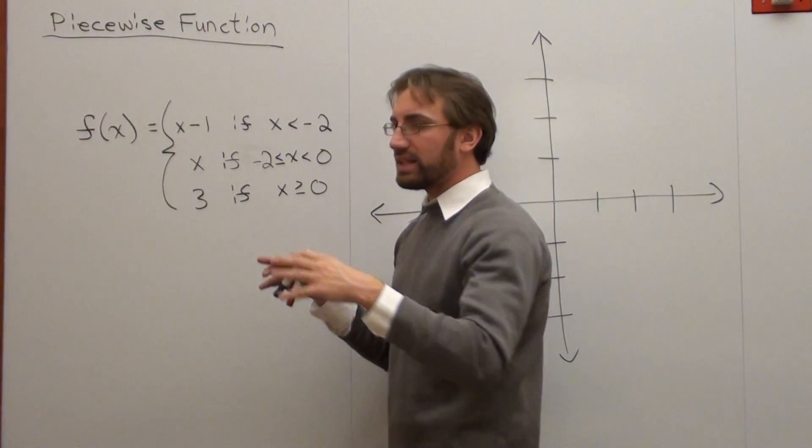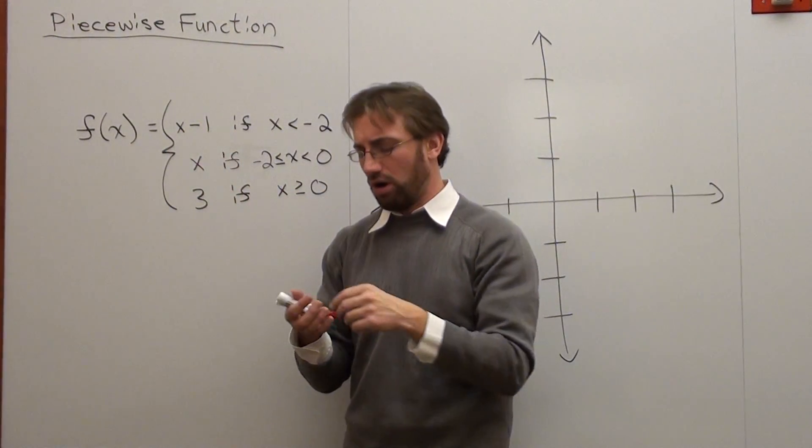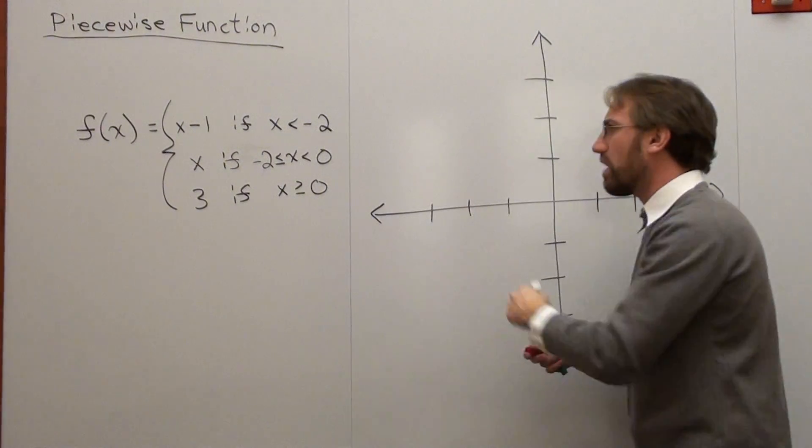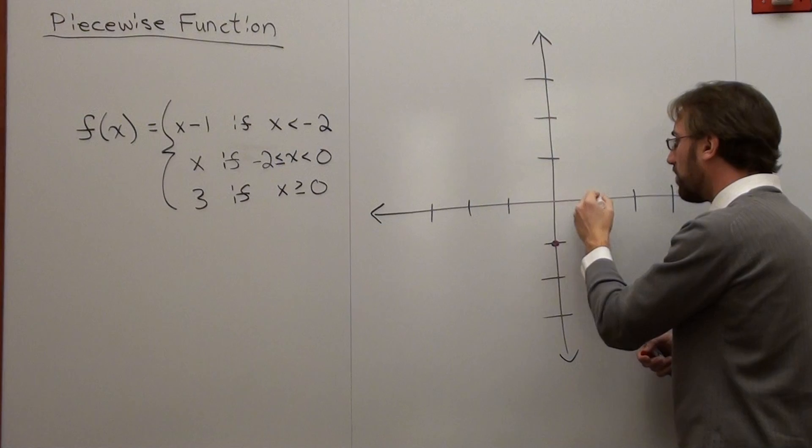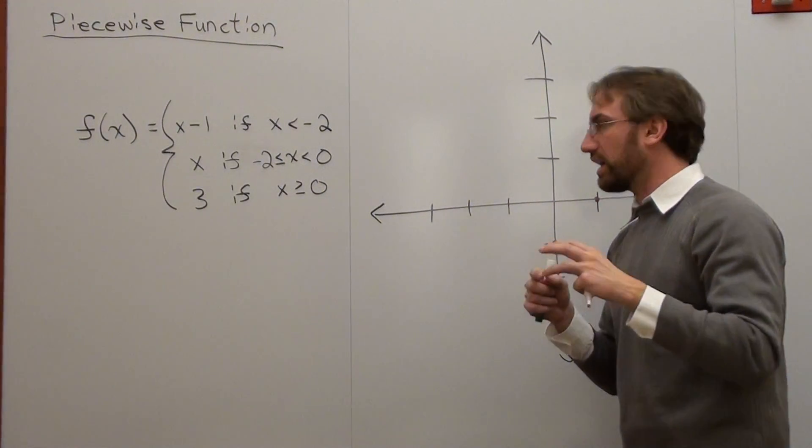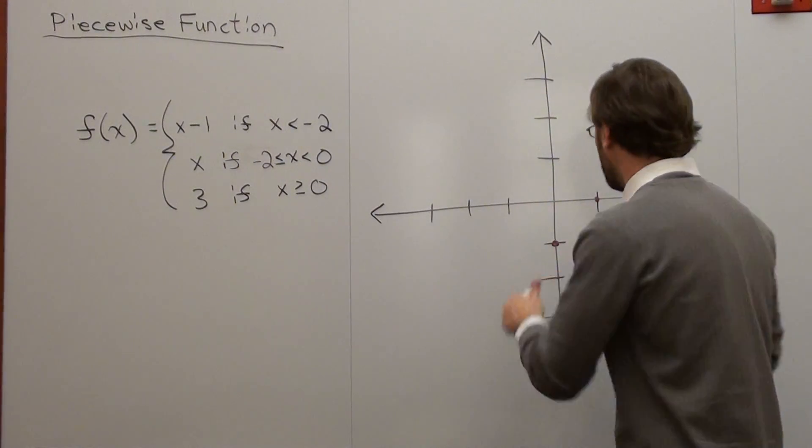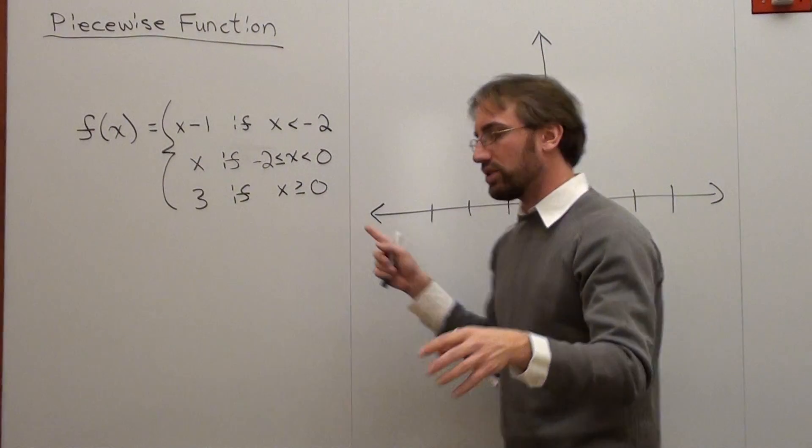Now, what it basically is saying is y is equal to x minus 1, the graph. I can graph x minus 1. The intercept is there and it's up 1 over 1. Not quite, actually. That's where it gets a little difficult. It is this graph, but it's only this graph if x is less than negative 2.